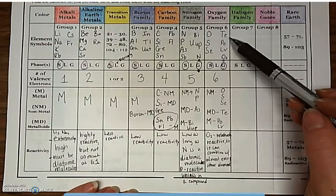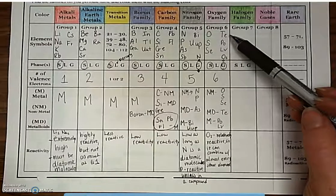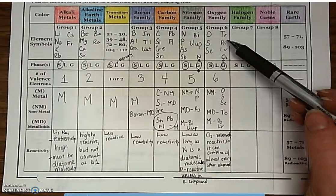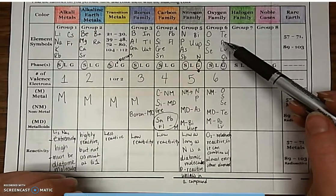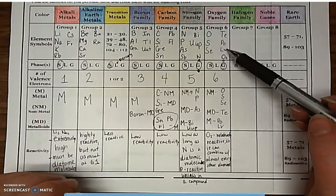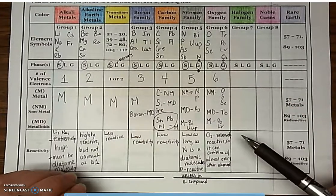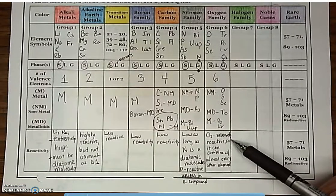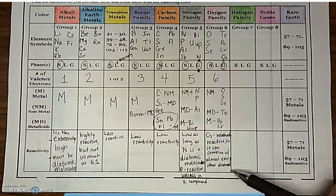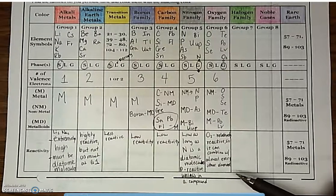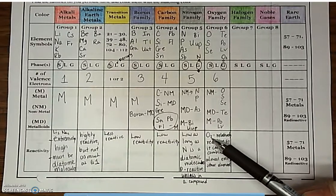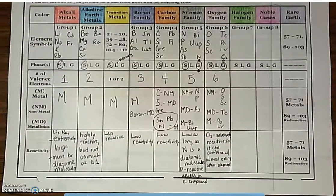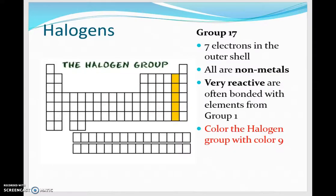And tellurium, which is our metalloid, we then also have polonium and livermorium, which are both metals. Now oxygen is relatively reactive, so it can combine with almost every other element on the table, which is pretty cool, and you find it in a lot of compounds. You also are going to find it written as that diatomic molecule with itself. Our next family are the halogens.